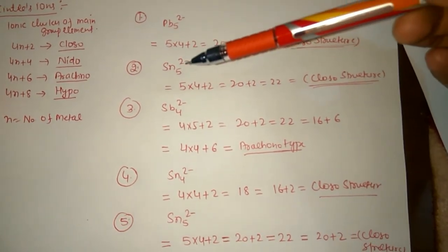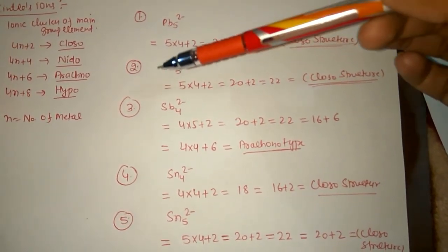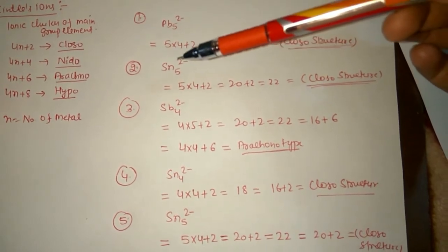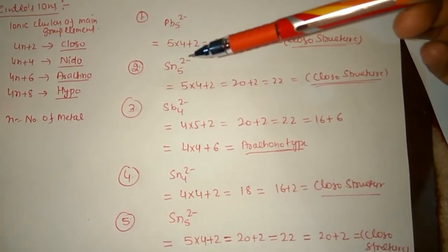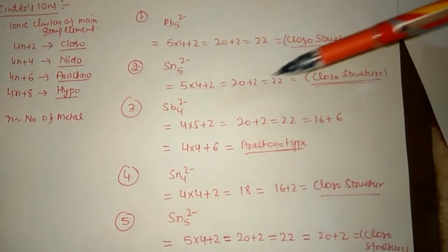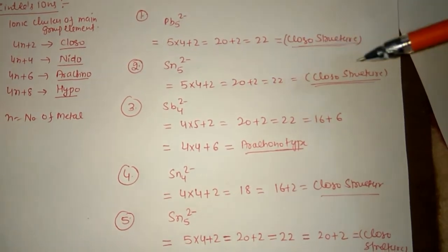Now if we have Sn5^2-, we know that in the valence shell of tin there are 4 electrons: 5×4+2, which is equal to 22. This again corresponds to clozo structure.